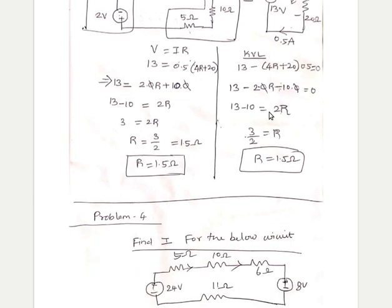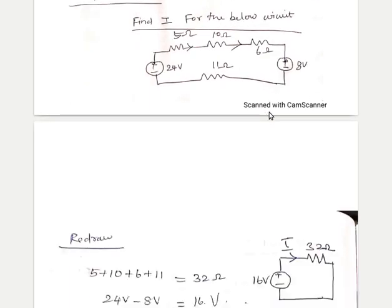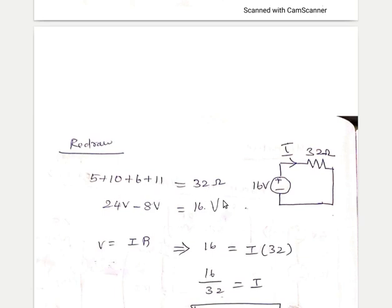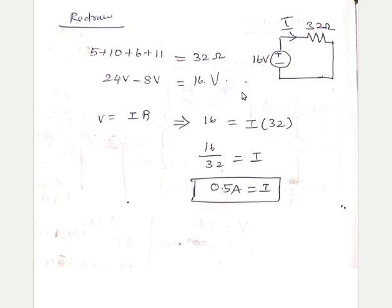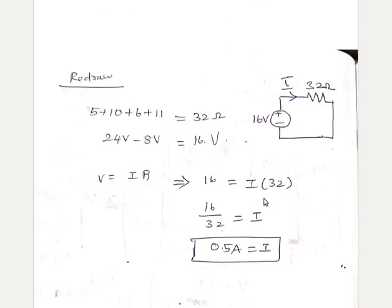Next is find I for the below circuit. So this circuit is given. Just I have simplified: 24 plus minus 2 plus 24 again, this is plus minus, so minus 8. 24 minus 8 is 16. Then all the resistors I have added. You have V equal to IR. V is 16 volt, and I you have to find out. R is 32. Then I have to find out the I value, so like this you have to find out. So we will meet in the next video. Thank you.